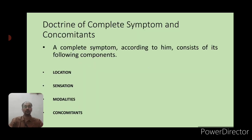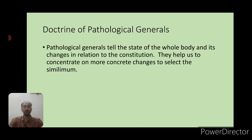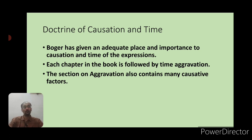The first concept is complete symptom and concomitant. According to Dr. Boenninghausen, every symptom has four different components: location, senses, modalities, and concomitants. So we divide the symptom into these four components. The doctrine of pathological generals was given by Dr. Boger himself — these are the pathological phenomena appearing in different parts or systems of the body, which are a true reflection of the constitution of any individual.